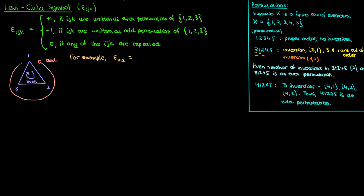So for instance, if I have epsilon 3, 1, 2, then since 3, 1, 2 occurs in a clockwise order on this diagram, I have to go clockwise to go from 3 to 1 to 2. Epsilon 3, 1, 2 corresponds to an even permutation and is therefore equal to 1.